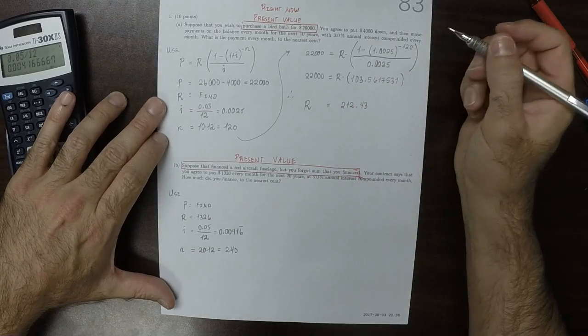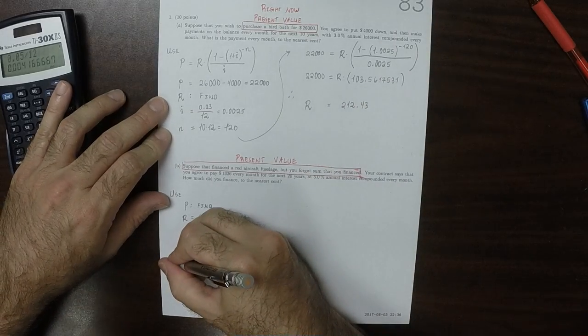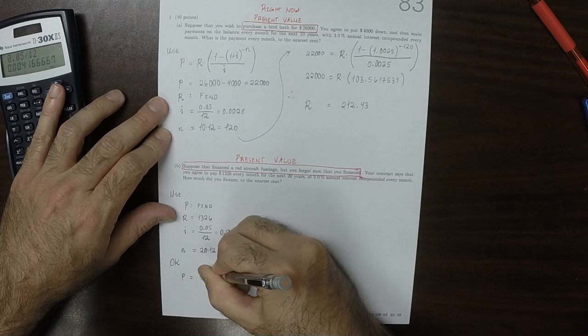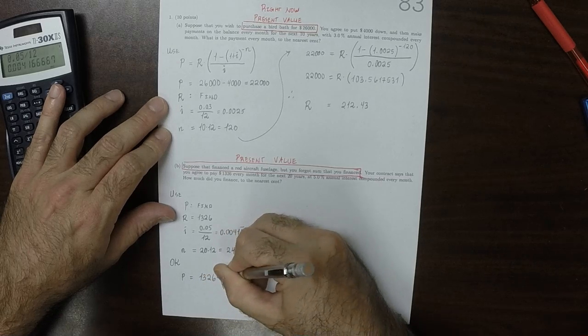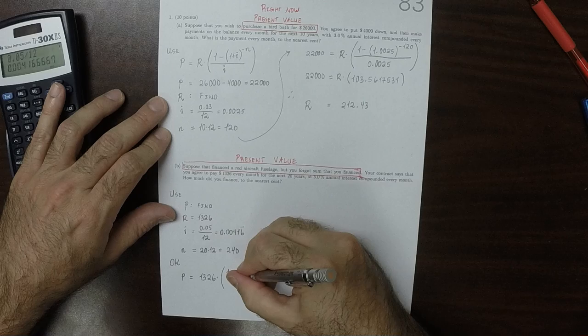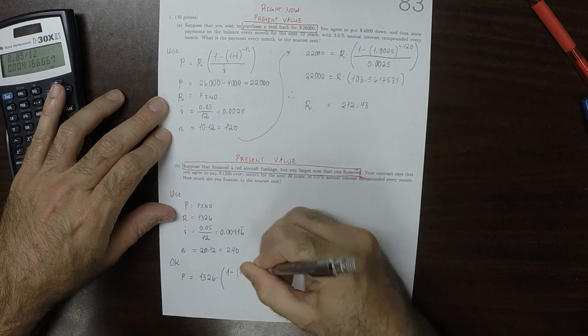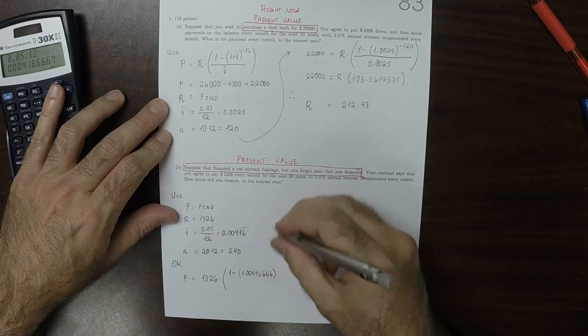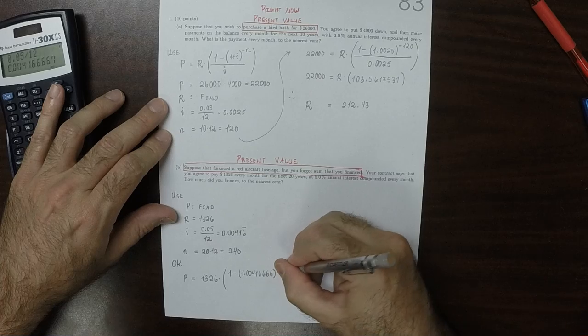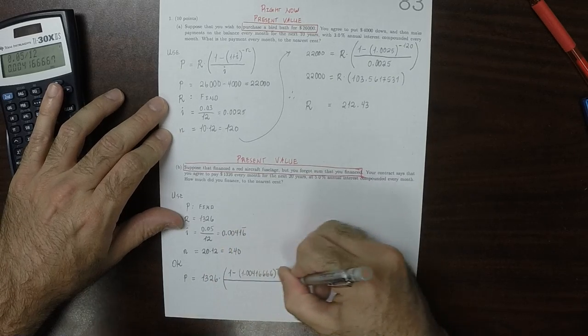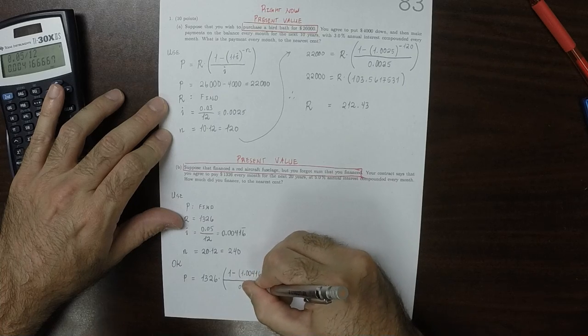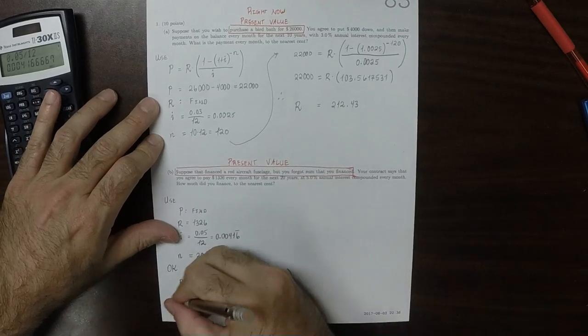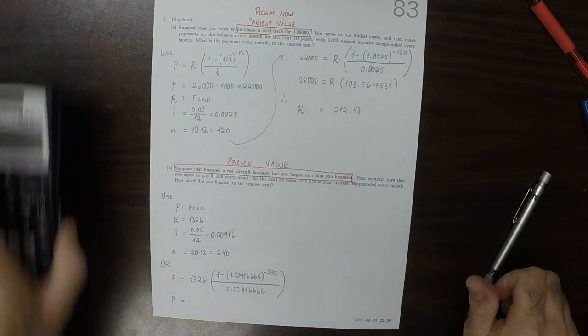And using that information, we're supposed to find P. So, P is 1326 multiplied by 1 minus 1.0041 and then I'll use a bunch of 6's, how about 4 6's, to exponent negative 240 and then divide by 0.00416666. That can just be typed into the calculator directly.